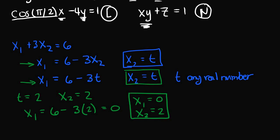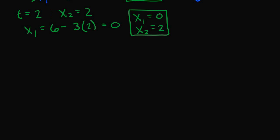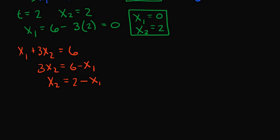You could also solve for x2 in terms of x1, making x1 the free variable instead. Starting from x1 plus 3x2 equals 6, if I subtract x1 from both sides I get 3x2 equals 6 minus x1, and dividing by 3 gives x2 equals 2 minus x1 over 3. Setting x1, the free variable, equal to any real number t, this equation becomes x2 = 2 − t/3.